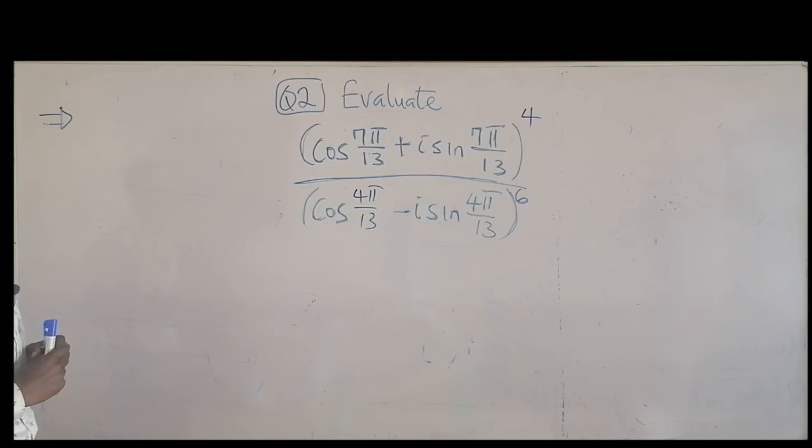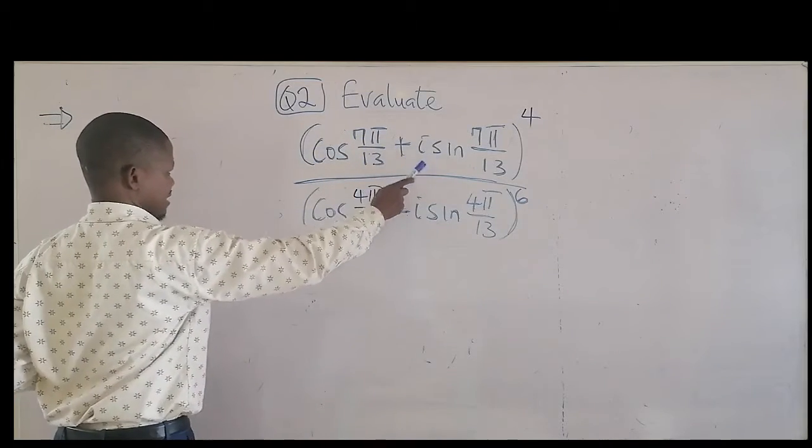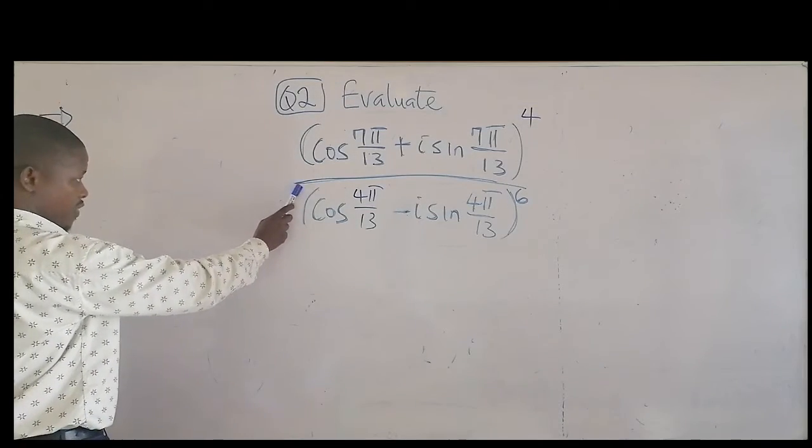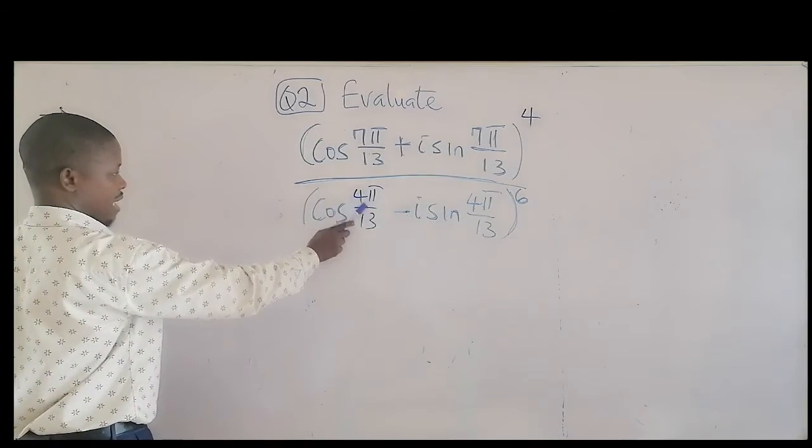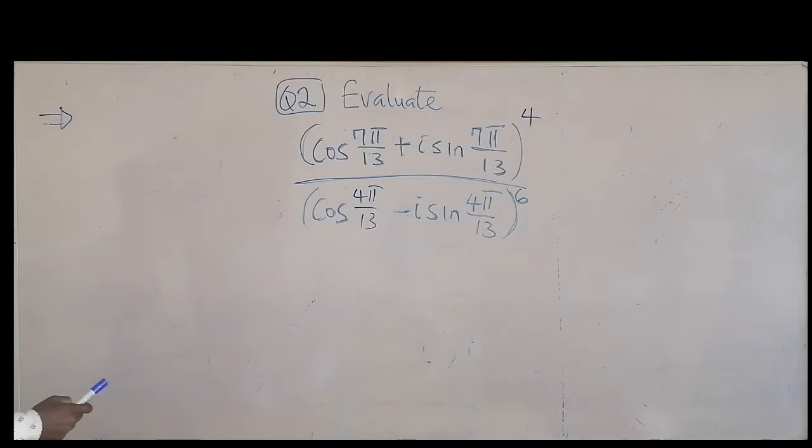Question 2. We have division of two complex numbers: cosine 7 pi over 13 plus i sine 7 pi over 18, all to the power 4, over cosine 4 pi over 13 minus i sine 4 pi over 13, all to the power 6.